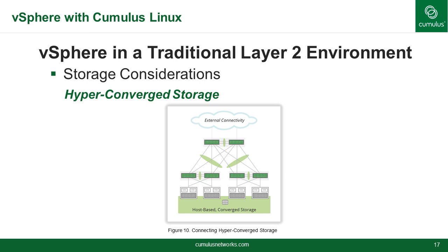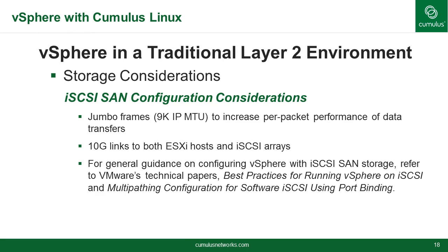Typical hyper-converged storage deployments leverage a common set of configurations: jumbo frames, 9K IP MTU, 10-gig links, and LACP bonds with IP hashing for ESXi hosts. The third most common form of network storage used with vSphere is iSCSI SAN. iSCSI storage network designs typically use dedicated physical NICs, VM kernel interfaces, and switch ports for storage traffic. In some cases, dedicated switches for the iSCSI SAN are deployed. Alternatively, some deployments use NICs and network fabric that share bandwidth for storage, management, and VM traffic. Typical iSCSI deployments also use jumbo frames and 10-gig links. For further information on configuring vSphere with iSCSI, please refer to VMware's technical paper as listed on the slide.